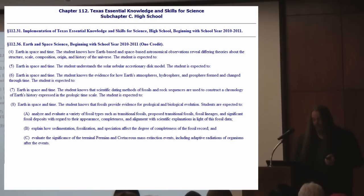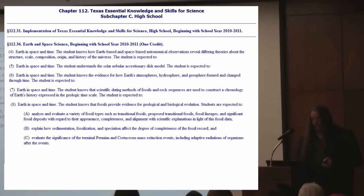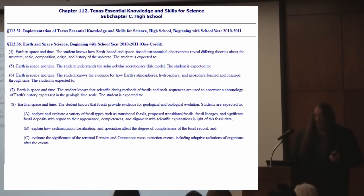Students are expected to analyze and evaluate a variety of fossil types such as transitional fossils, proposed transitional fossils, fossil lineages, and significant fossil deposits with regard to their appearance, completeness, and alignment with scientific explanations. They also explain how sedimentation, fossilization, and speciation affect the degree of completeness of the fossil record, and evaluate the significance of the terminal Permian and Cretaceous mass extinction events, including adaptive radiations of organisms after these events.